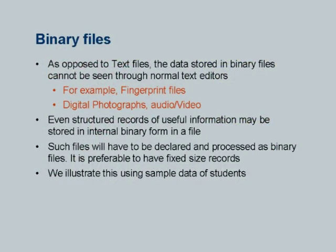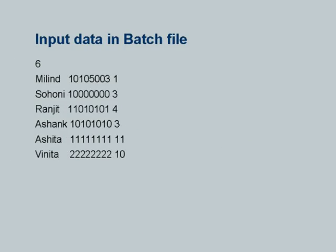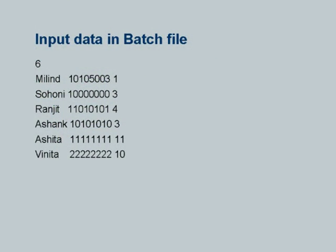We will illustrate this using the sample data of students we had defined. Here the input data file is created in a batch file — it is artificial data. There are names of students, a roll number, and let's say a hostel number. Of course, the data I would like to store for each student could be much more — for example, marks obtained in exams, grades in a course and so on. What I have prepared is a limited input based on the information available to me.